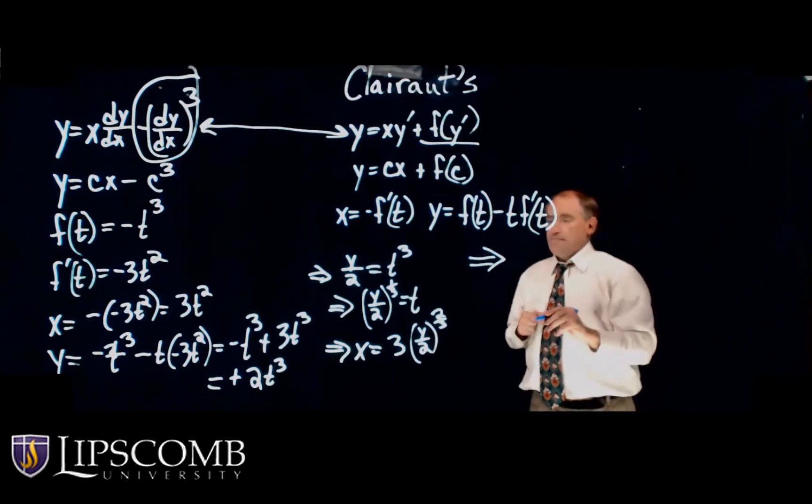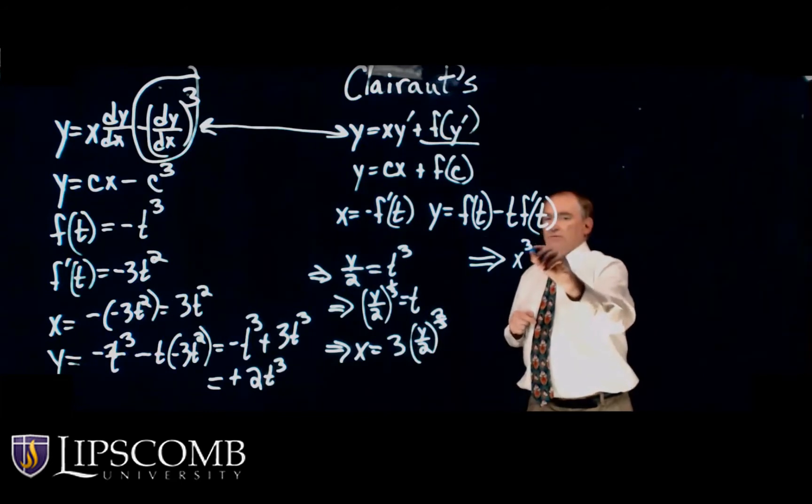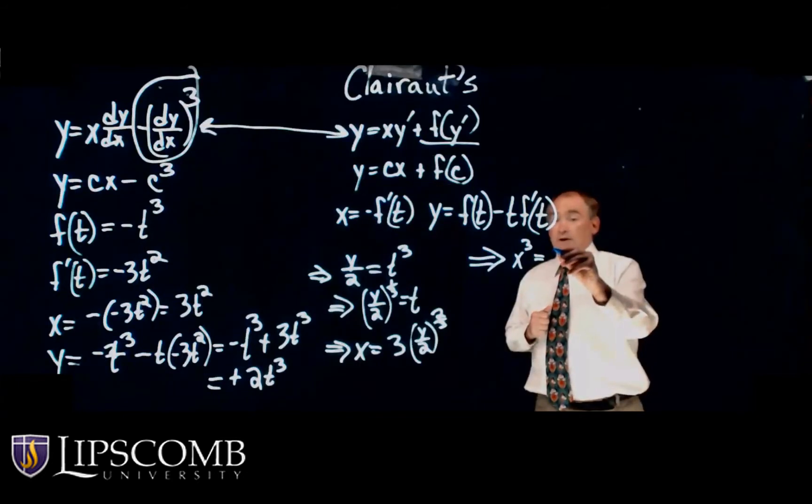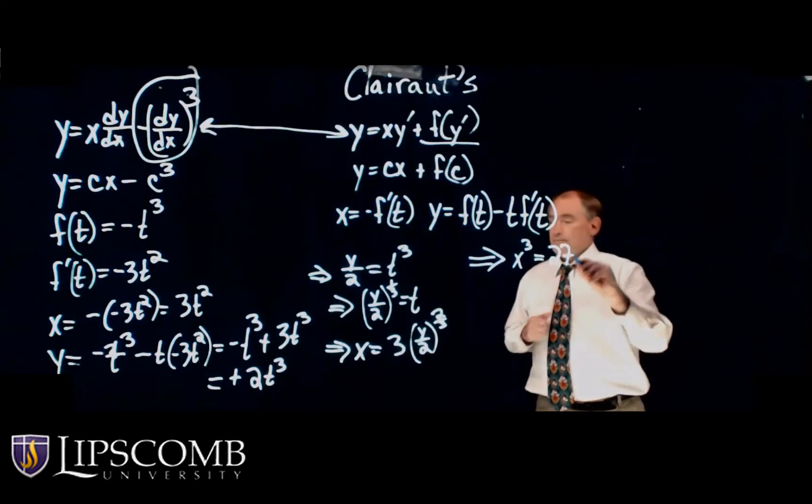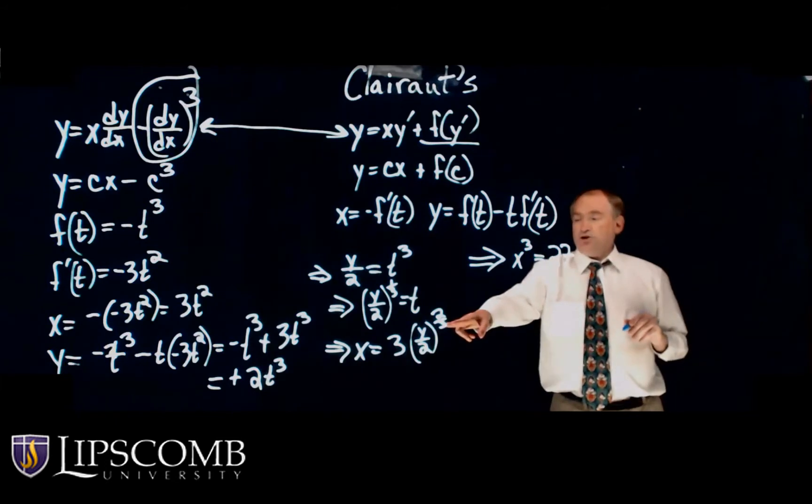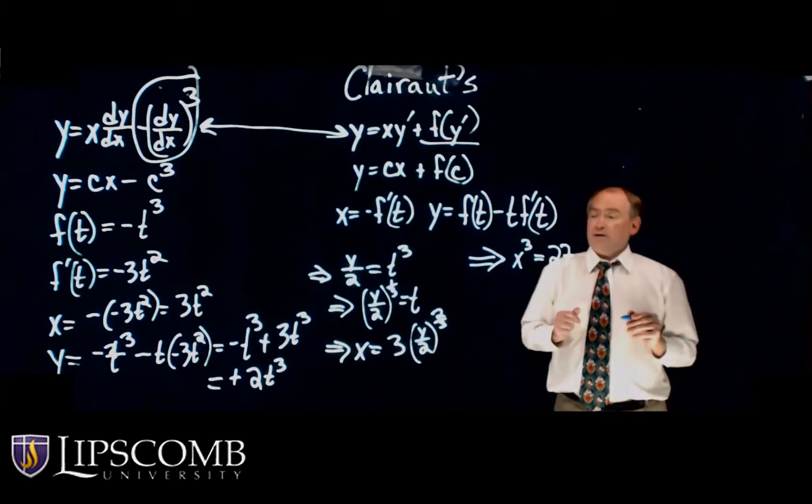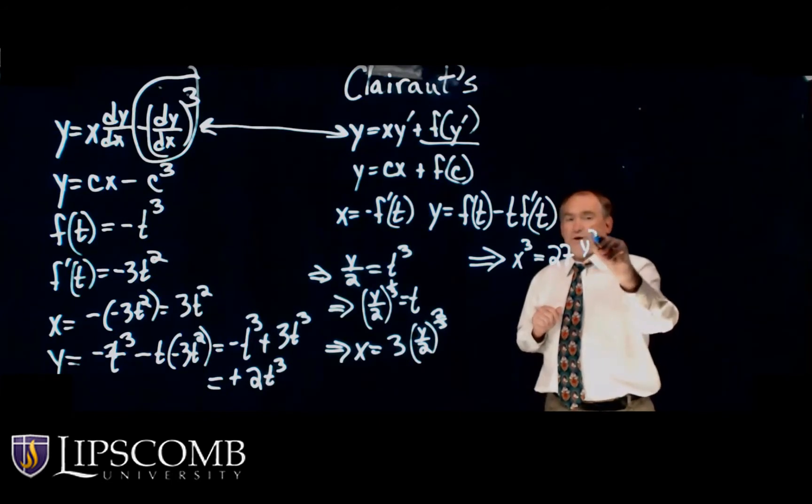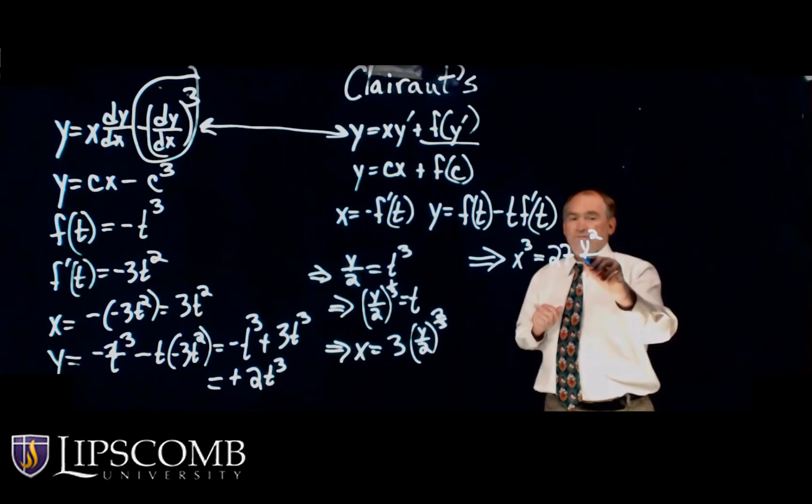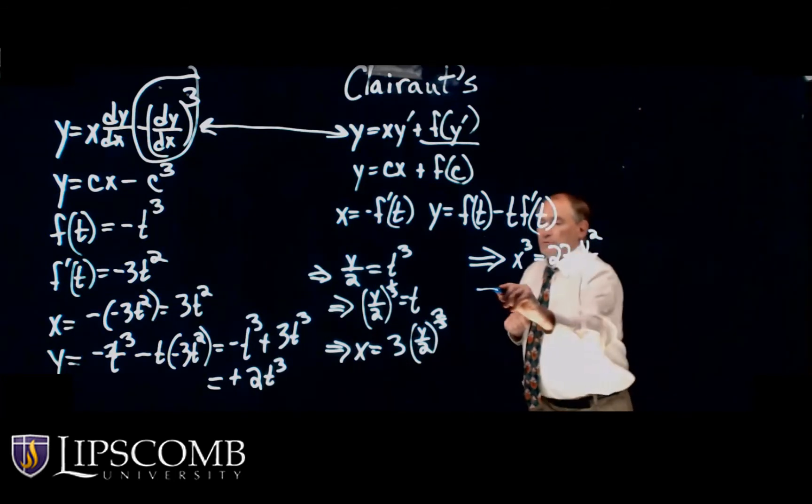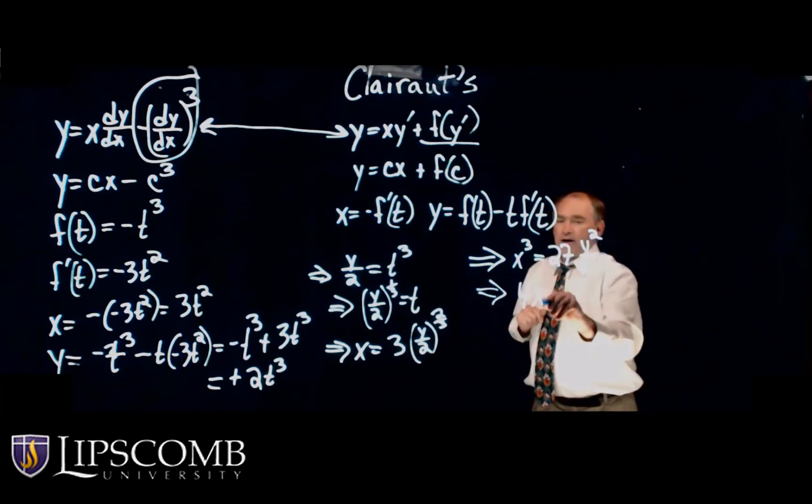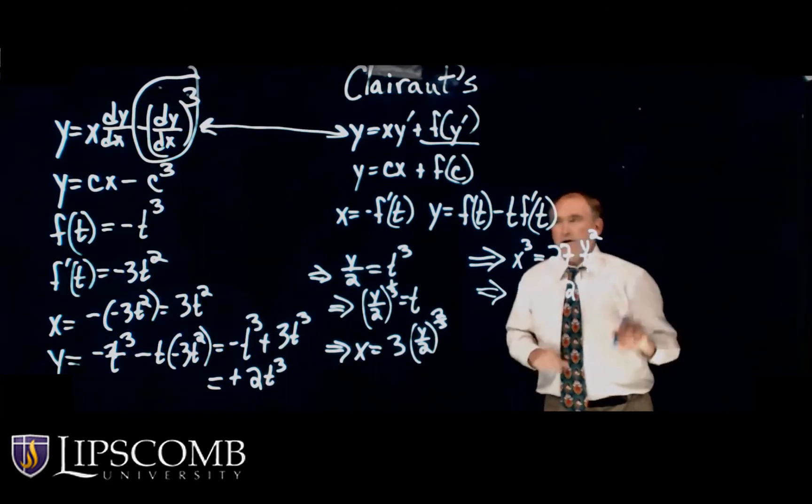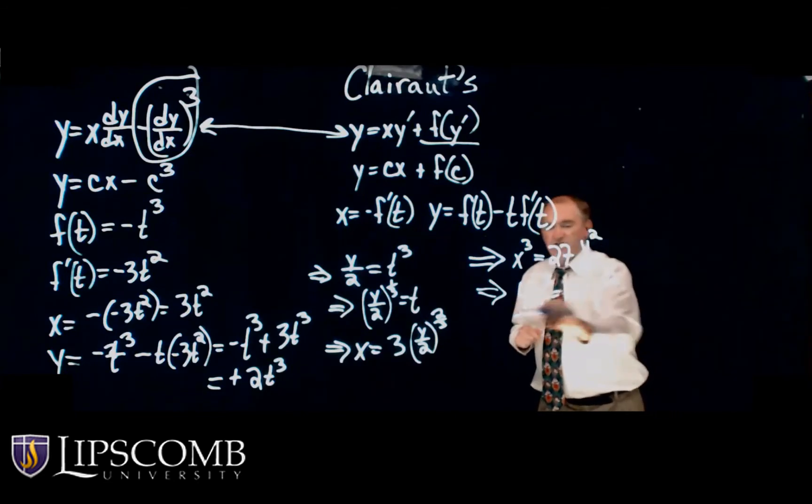We get X cubed equals 3 cubed, that would be 27. Then I've got, since it's a cubed root and I'm cubing it, that would leave it with the square. So this would be Y squared over 2 squared, which is 4. So we get 4X cubed equals 27Y squared. So this is my singular solution.